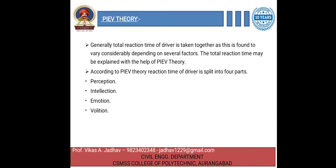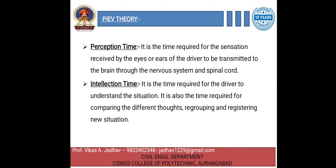The four parts are: perception time, intellectual time, emotional time, and volition time. Perception time is the time required for the sensation received by the eyes or ears of the driver to be transmitted to the brain through the nerve system and spinal cord.